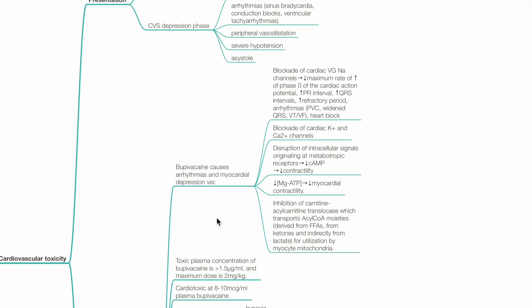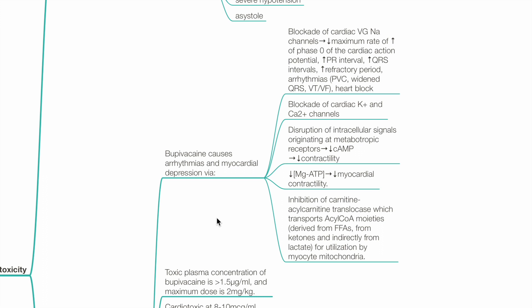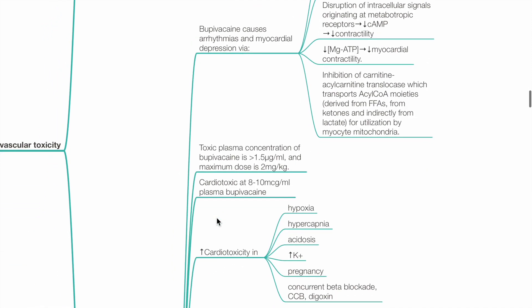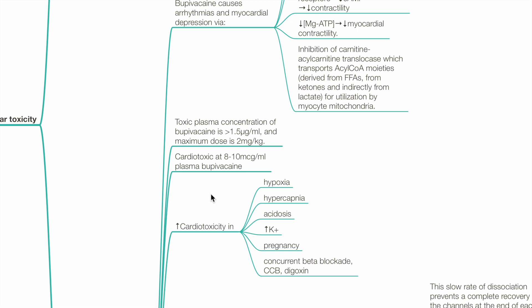Bupivacaine also blocks cardiac potassium and calcium channels, disrupts intracellular signals originating at metabotropic receptors, which reduces cAMP and contractility, and reduces magnesium ATP, which reduces contractility. Bupivacaine also inhibits carnitine acyl-carnitine translocase, which transports acyl-CoA moieties for utilization by myocyte mitochondria. Toxic plasma concentration of bupivacaine is more than 1.5 micrograms per mL; maximum dose 2mg per kg. Bupivacaine is cardiotoxic at plasma levels of 8 to 10 micrograms per mL.